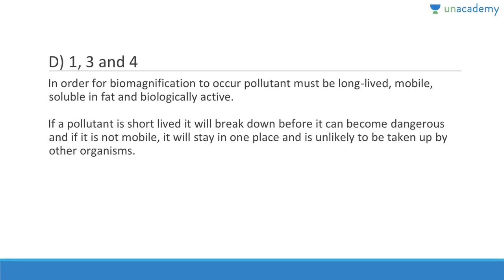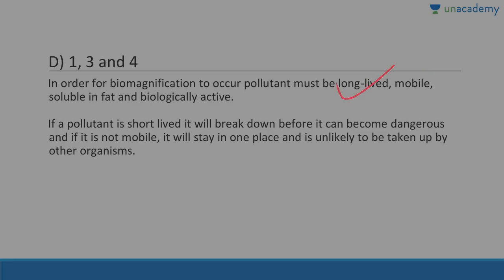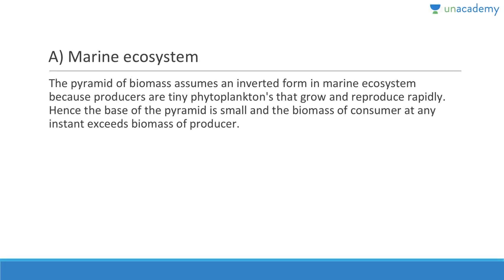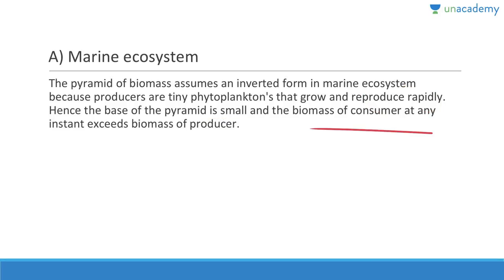Question seventeen: An inverted pyramid of biomass can be found in which ecosystem? It is the marine ecosystem. Blue whales are huge but planktons do not weigh much, so answer is marine ecosystem. The pyramid of biomass assumes an inverted form in marine ecosystems because there are tiny phytoplanktons that grow and reproduce rapidly at the base of the pyramid, and the biomass of consumers at any instant exceeds the biomass of producers. These are important concepts.